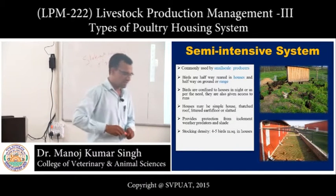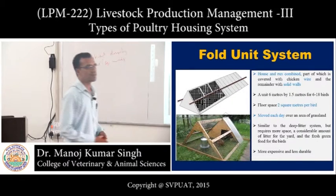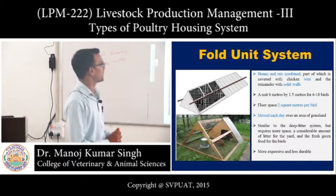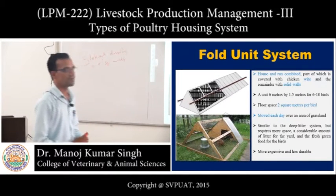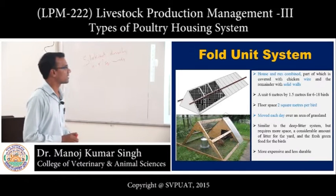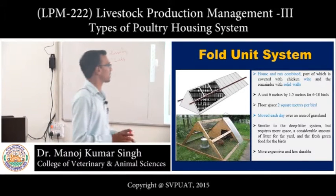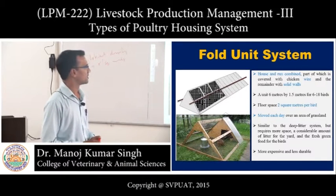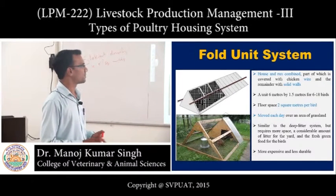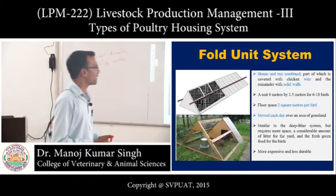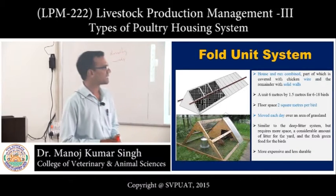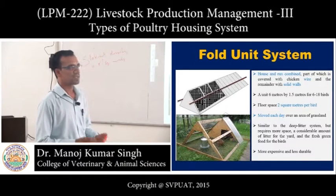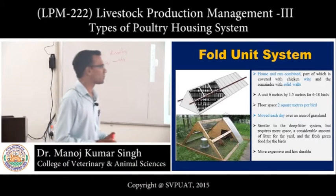Next is the folding unit system. In this system, the house and run are combined and covered with chicken wire mesh, with the remainder being solid walls. A unit of 6 meters by 1.5 meters is used for 6 to 18 birds, and the floor space requirement is 2 square meters per bird.